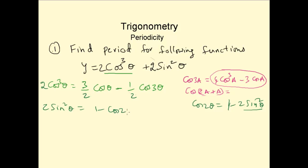So if we substitute these two functions back in here, you get y equal to 3 by 2 cos theta minus half cos 3 theta plus 1 minus cos 2 theta.